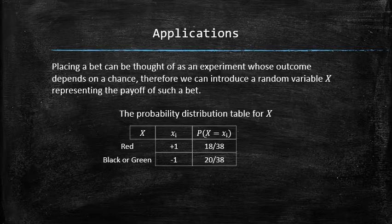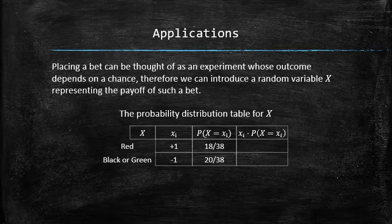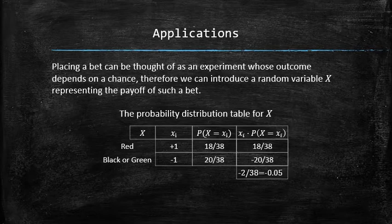We can now compute the expected value by adding another column on the right and computing the product of each possible value by its probability. The sum of the column is negative 0.05, and this is the number that we call the expected value.